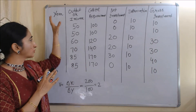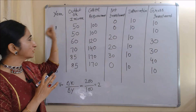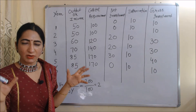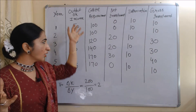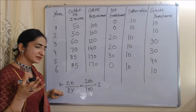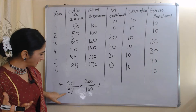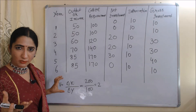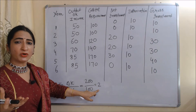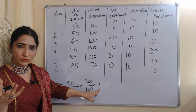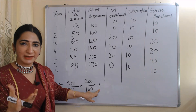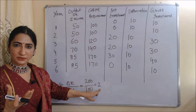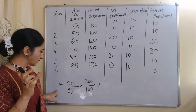Now we will understand this principle with the help of a table. The first column has time period: one, two, three, four, five, six. The second column has output or income. The third column has capital requirement — how much capital we need for a particular amount of output, i.e., the capital-output ratio. Here we assume the value of the accelerator is equal to 2, meaning for a particular amount of output, we need double the capital.